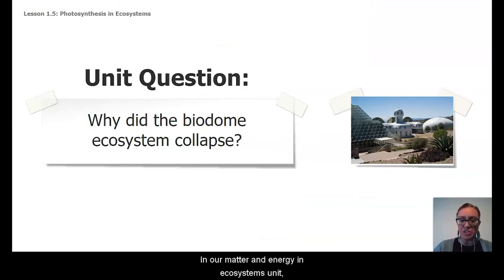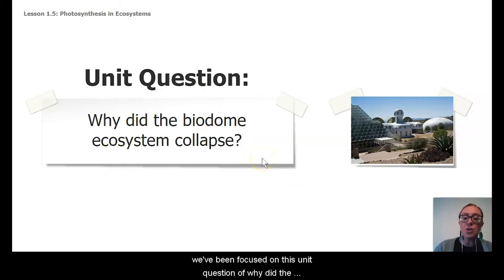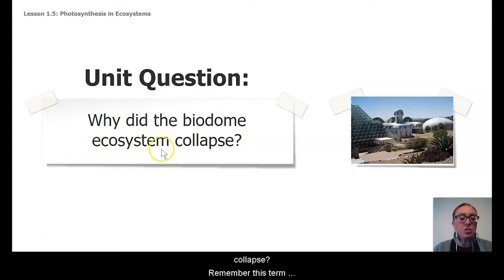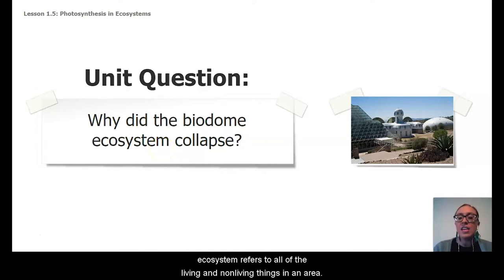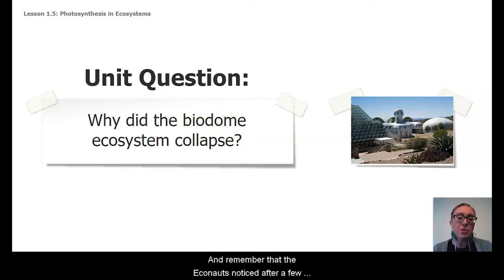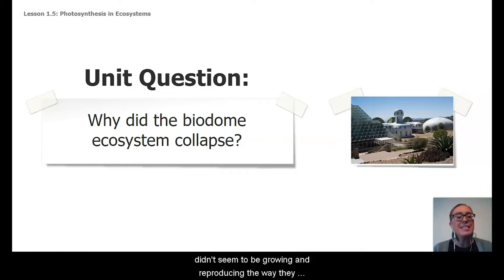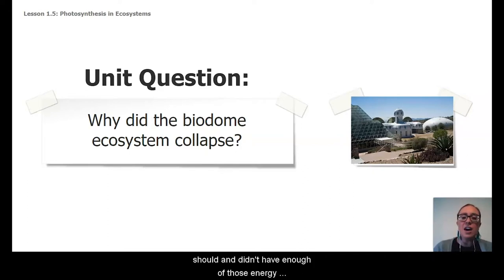In our Matter and Energy and Ecosystems Unit, we've been focused on this unit question of why did the Econauts' biodome ecosystem collapse? Remember, this term ecosystem refers to all of the living and the non-living things in an area, and that a biodome is just a human-made ecosystem. And the Econauts noticed after a few years that the plants and the animals living in this biodome didn't seem to be growing and reproducing the way they should and didn't have enough of those energy storage molecules that they needed.